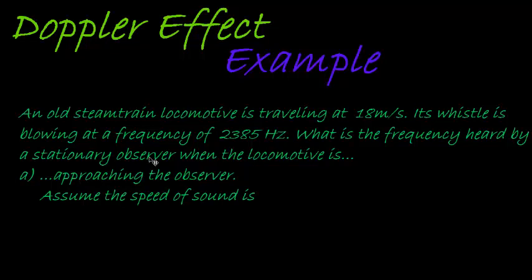A steam train locomotive is traveling at 18 meters per second. Its whistle is blowing at a frequency of 2385 Hz. What is the frequency heard by a stationary observer when the locomotive is approaching the observer?